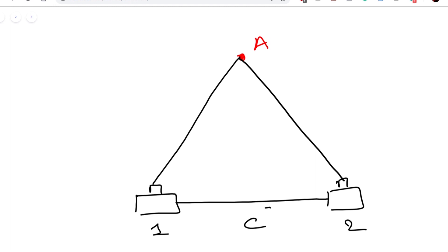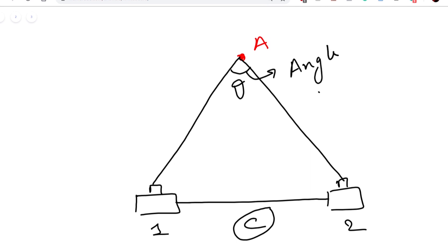While observing parallax, if we know the distance C between the two cameras and the angular difference in observation between the two cameras — which is the angle of parallax, let's call it theta — we can determine the distance of each camera to the object.